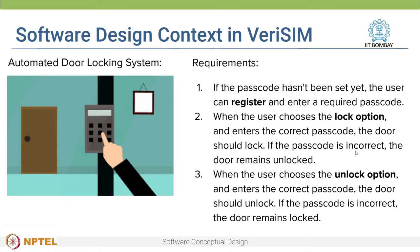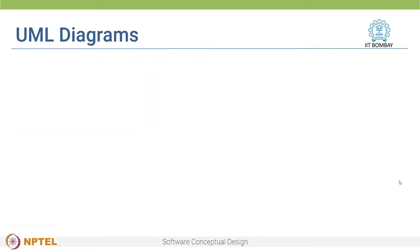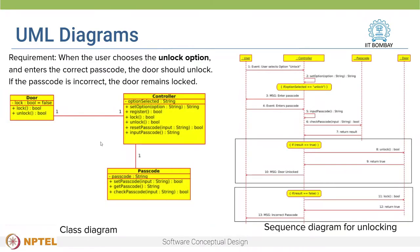However, if the passcode is incorrect, the door should remain unlocked. A similar requirement exists for the unlock option as well. These requirements are modeled using various UML diagrams, such as the class diagram shown on the left and one of the sequence diagrams for unlocking shown on the right. The automated door locking system has a class diagram and several sequence diagrams which model the requirements of the system.